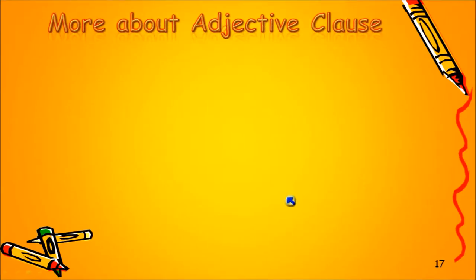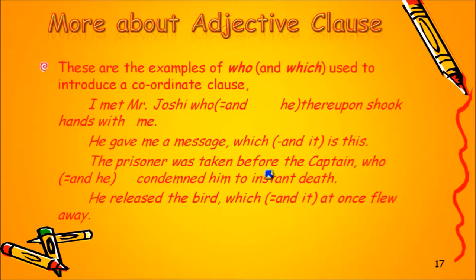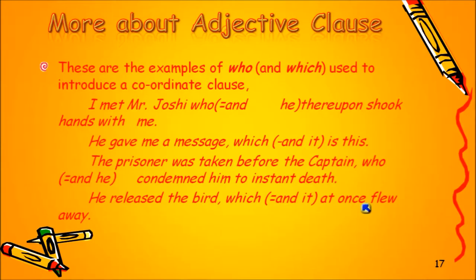Now, looking at more examples — every sentence produced in the next examples uses 'who,' 'that,' or 'which' to introduce a coordinate clause, not an adjective clause or relative clause. These are coordinate clauses, not subordinate clauses.